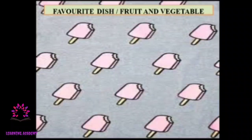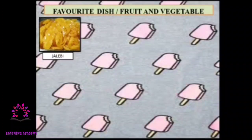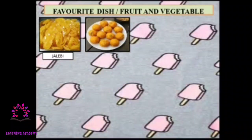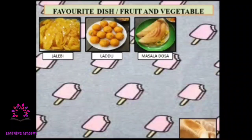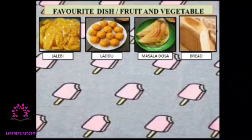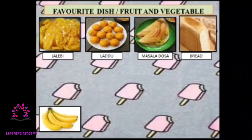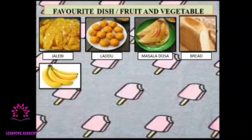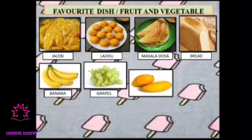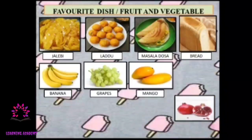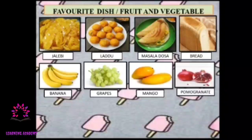You might have some favorite dishes. What is this, students? Yummy jelly, right? This is again yummy — laddu! Dosa — masala dosa. When you go to a hotel you like to eat masala dosa, right? This is bread — out of bread you can prepare a variety of sandwiches. Now let's learn about fruit. Some like banana, some like grapes, some like mango, some may like pomegranate.